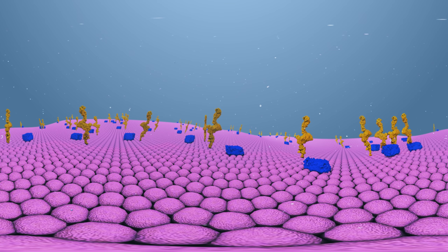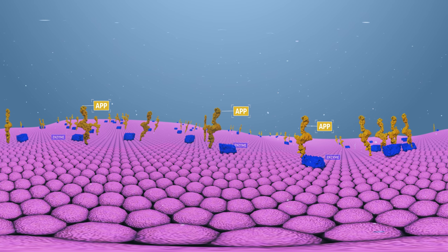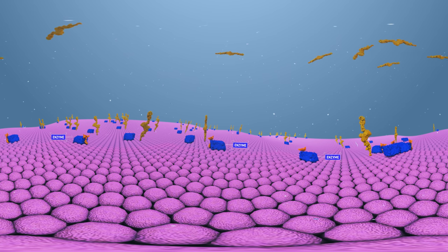The plaque story starts at the surface of neurons with a large protein called APP, the yellow figure shown here sitting in the cell's covering membrane. Enzymes, seen in blue, normally cut APP so it can be cleared away, but sometimes the enzymes make those cuts abnormally.